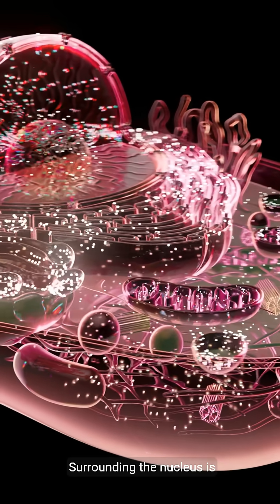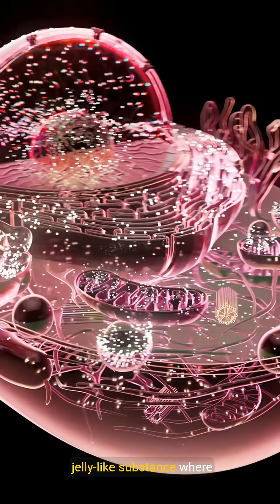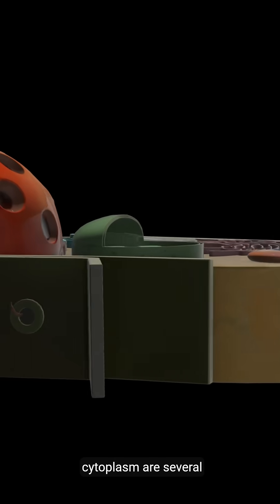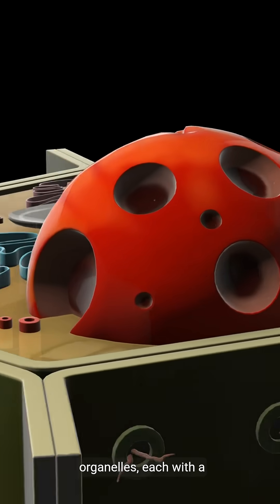Surrounding the nucleus is the cytoplasm, a jelly-like substance where many cellular processes occur. Floating within the cytoplasm are several organelles, each with a unique role.